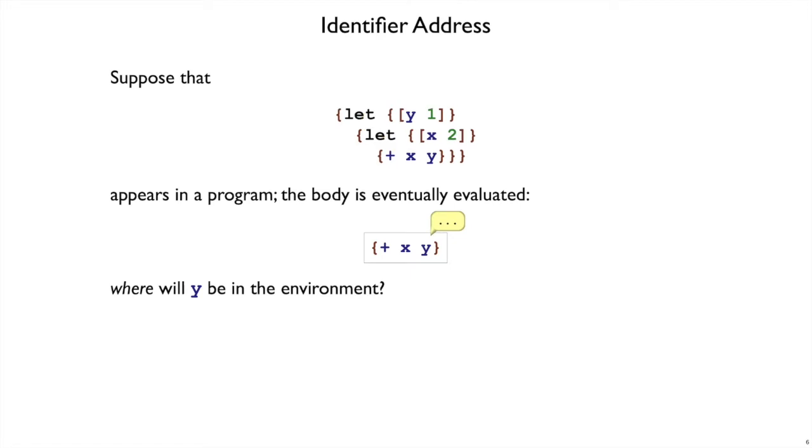Let's change the program again. Let's suppose that we end up at a let y be 1, let x be 2 plus xy. Where are x and y now? We can ask about both x and y in this case since we can see both of them. We know that x will be first, but we also know that y will be second.